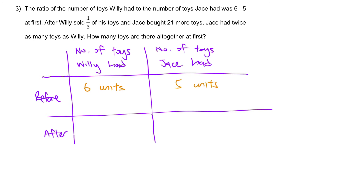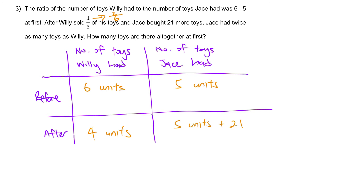After Wheelie sold 1 third of his toys, he is left with 4 units — because 1 third is 2 units out of 6, so he sold 2 out of 6 and is left with 4. And Jase bought 21 more toys, therefore we write 5 units plus 21.